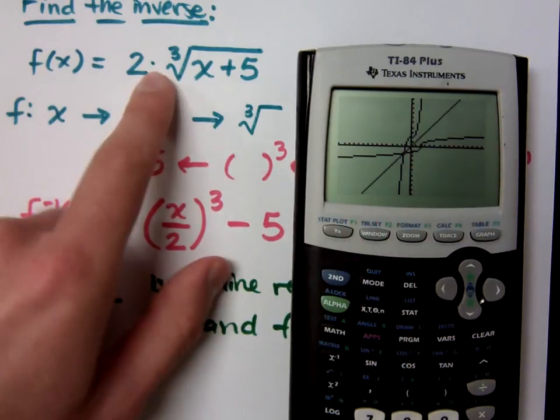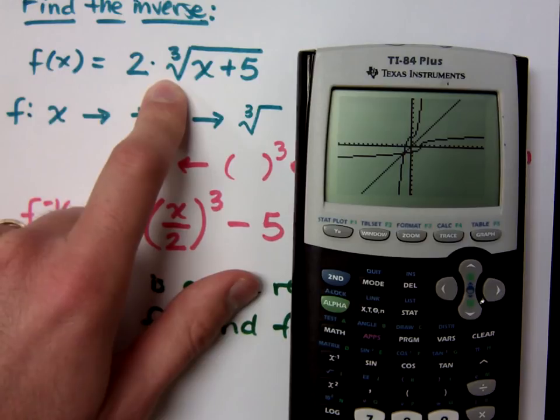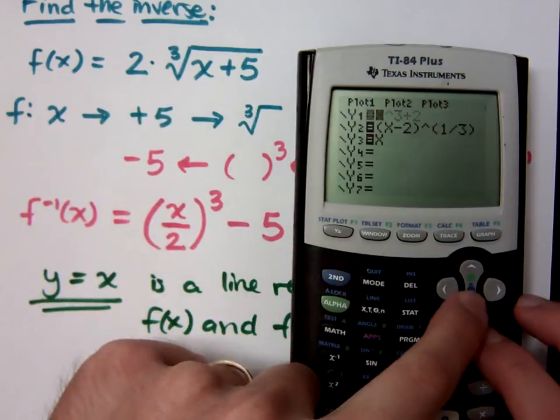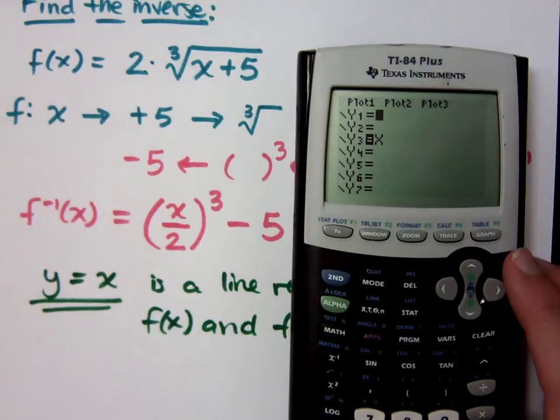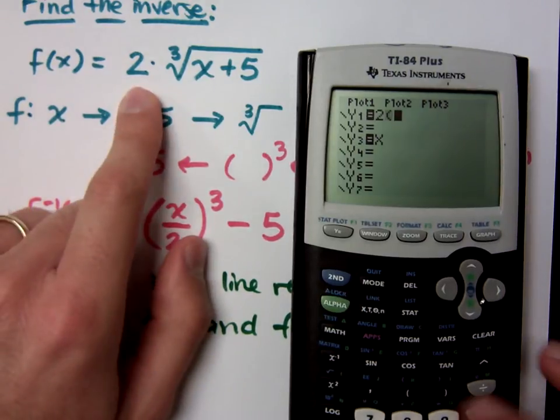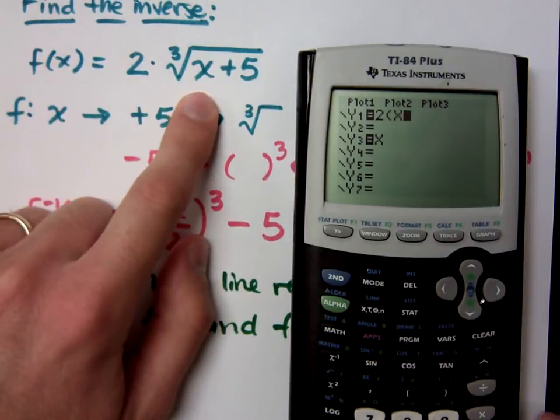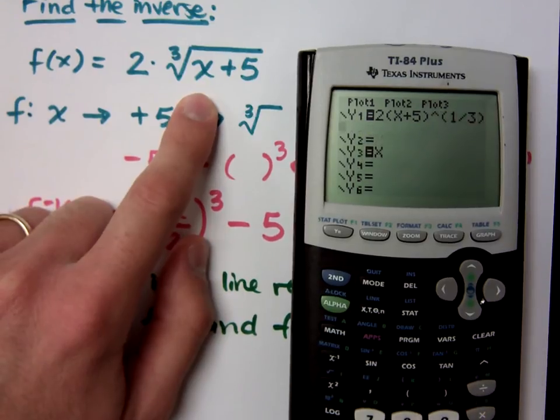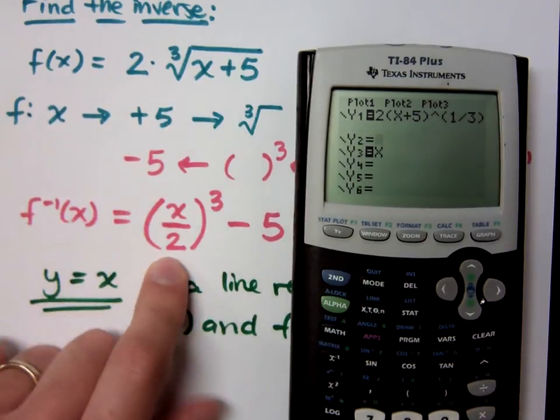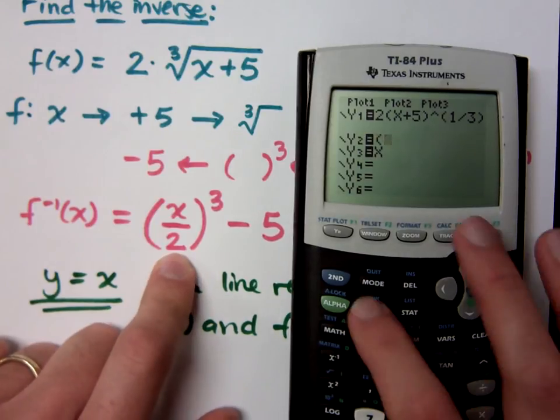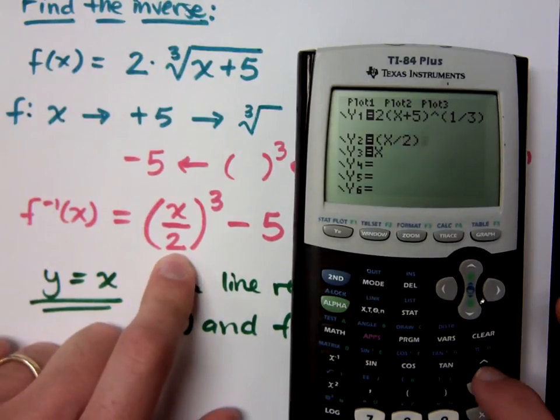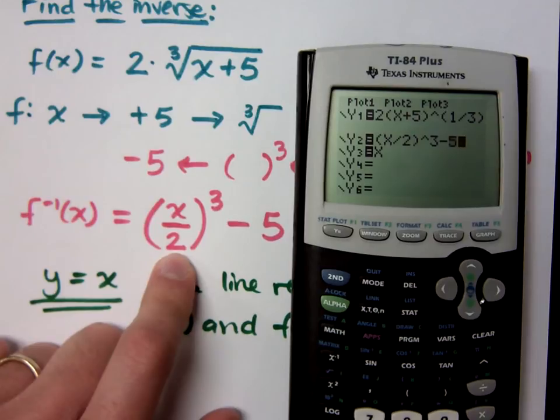So we just did a guy right here. Let's see how this compares in terms of being an inverse. So 2 times x plus 5 raised to the 1 third power, and then I said my inverse should be the quantity x divided by 2 to the third minus 5.